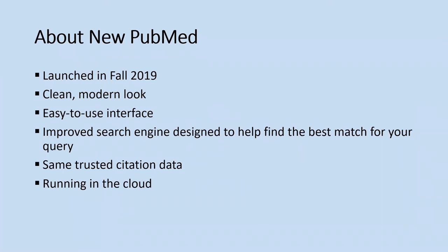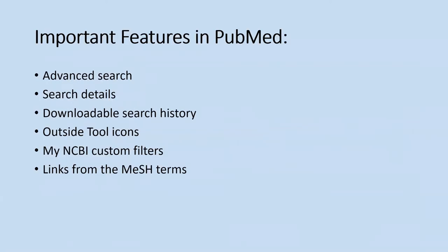The new PubMed was launched in fall of 2019. It's currently running alongside the old PubMed, which is called Legacy PubMed. It has a clean modern look, easy-to-use interface, and improved search engine designed to help find the best match for your query. It has the same trusted citation data and runs in the cloud. Some important features include the advanced search feature, search details, downloadable search history, outside tool icons — the NYIT icon and the publisher icon — My NCBI custom filters, and linking from medical subject heading terms.